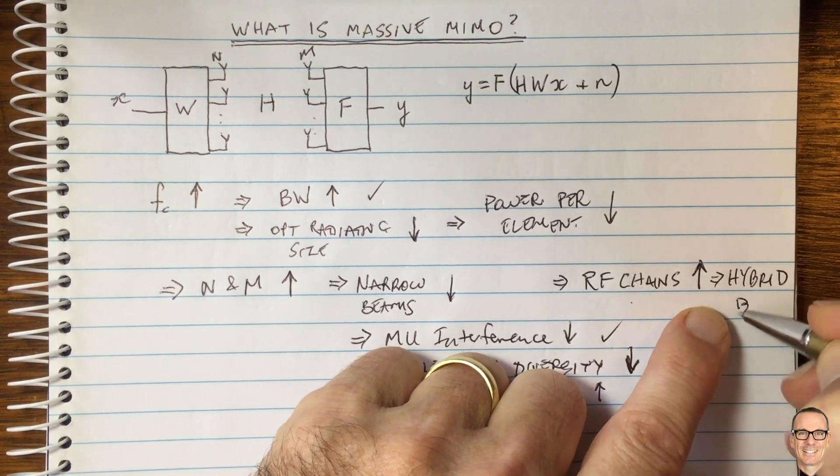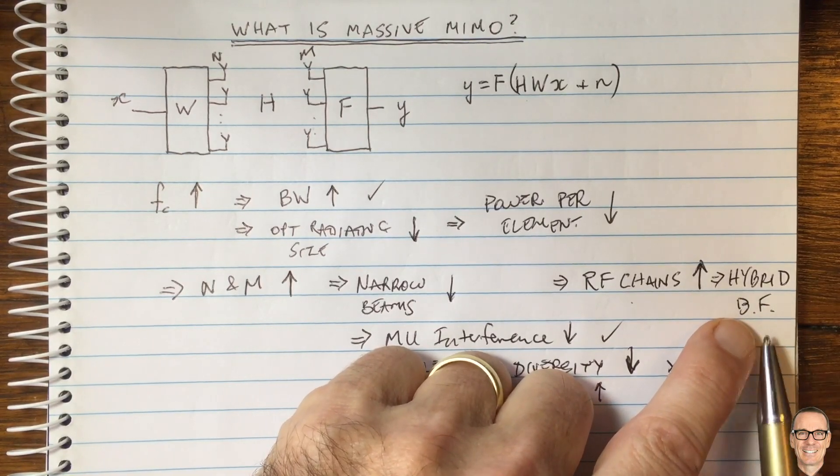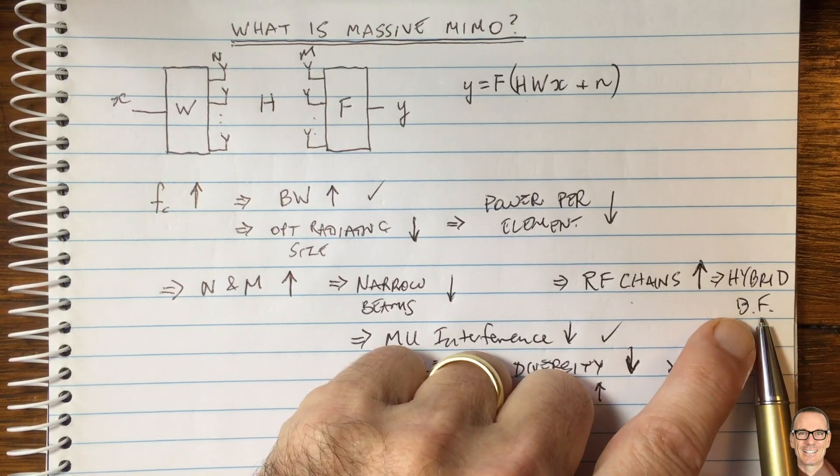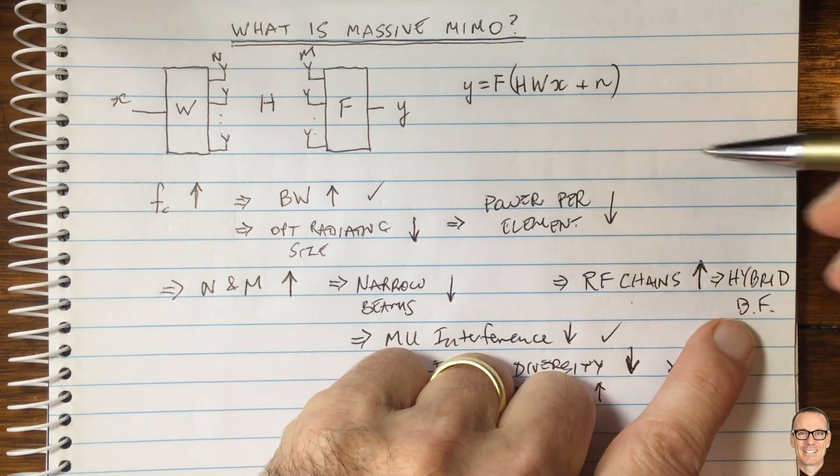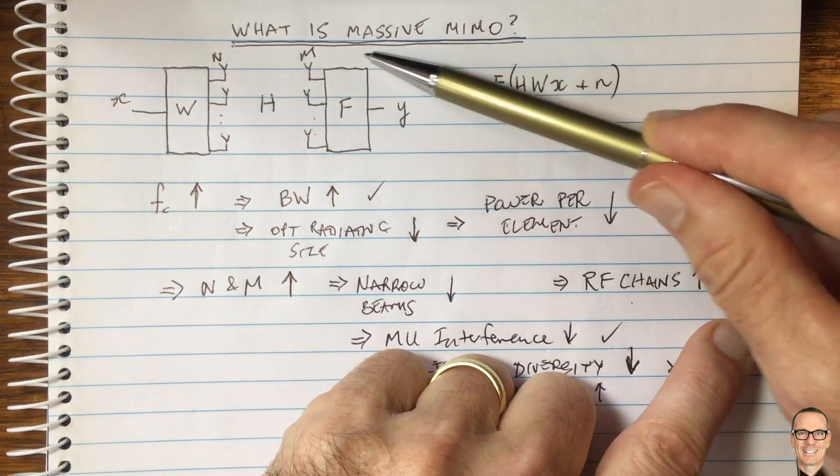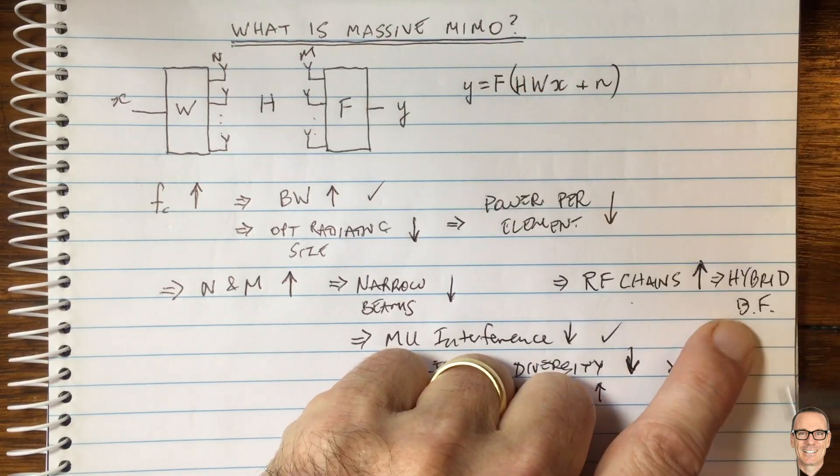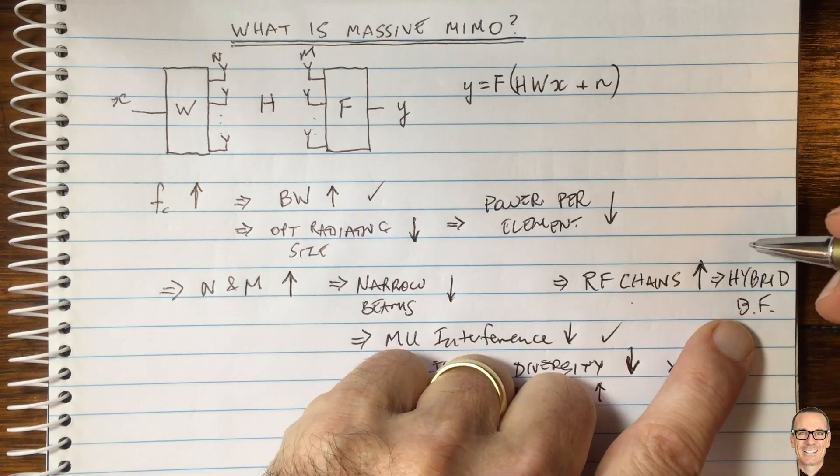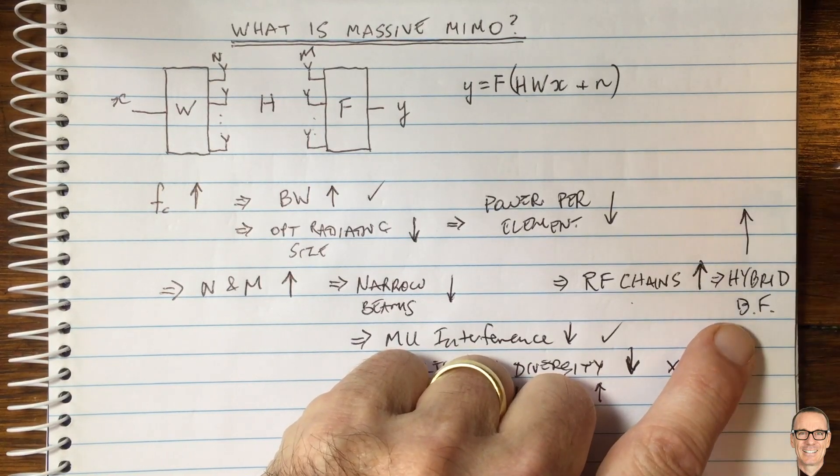The need for RF chains goes up, and this leads to a requirement for what's called hybrid designs: hybrid beamforming. That is a way of trying to implement the massive numbers but without an RF chain for every antenna.